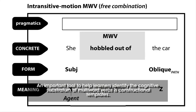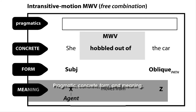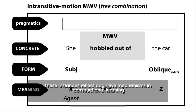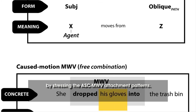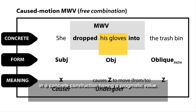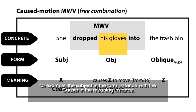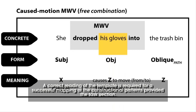An important tool to help learners identify the cognates of straight and multi-word verbs is constructional templates. These provide visual prompts containing four instances for the analysis of multi-word verbs: pragmatic, concrete, form, and meaning. These instances reflect cognitive mechanisms in constructional learning by stressing the argument structure construction–multi-word verb attaching patterns. The reading of the template begins with the association of form and meaning in a concrete construction having a pragmatic value. In analyzing the concrete instance, learners should first pay attention to the multi-word verb slot (the gray box) as well as the elements associated with the verb (the yellow box). Since all instances are aligned vertically, the elements contained within can be related — for example, the subject in the form instance with the causer in the meaning instance. A correct reading of the template is required for the successful mapping of the constructional pattern provided in the text section.